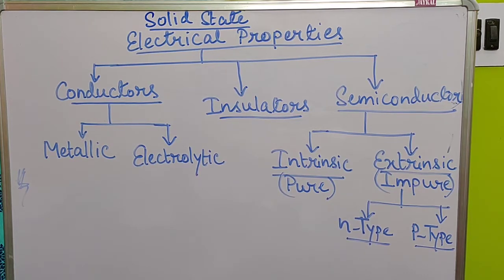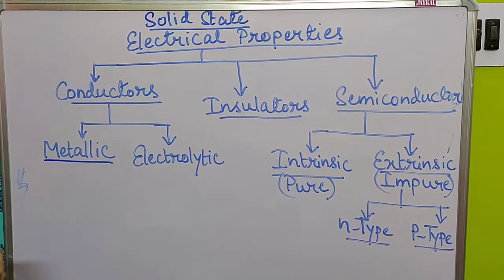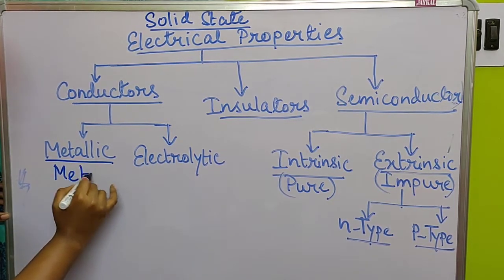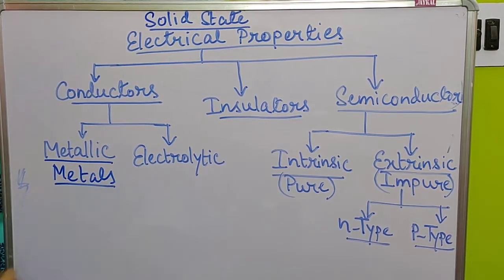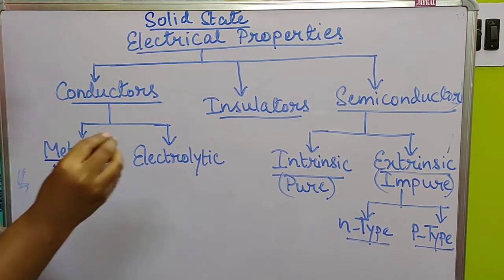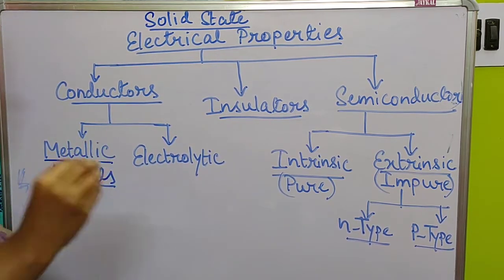There are two types of conductors. The first one is metallic and the second one is electrolytic. So what are metallic conductors and what are electrolytic conductors?